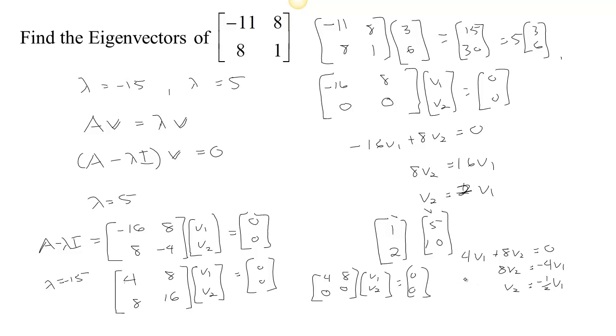Now we can find any other eigenvector. The pattern is that the second entry has to be negative 1 half times the first entry. So eigenvectors associated with negative 15 are going to follow that pattern. For example, if V1 is 2, then V2 is negative 1 half that. Or if V1 was 8, then V2 would be negative 4. These are both examples of eigenvectors associated with that eigenvalue of negative 15.